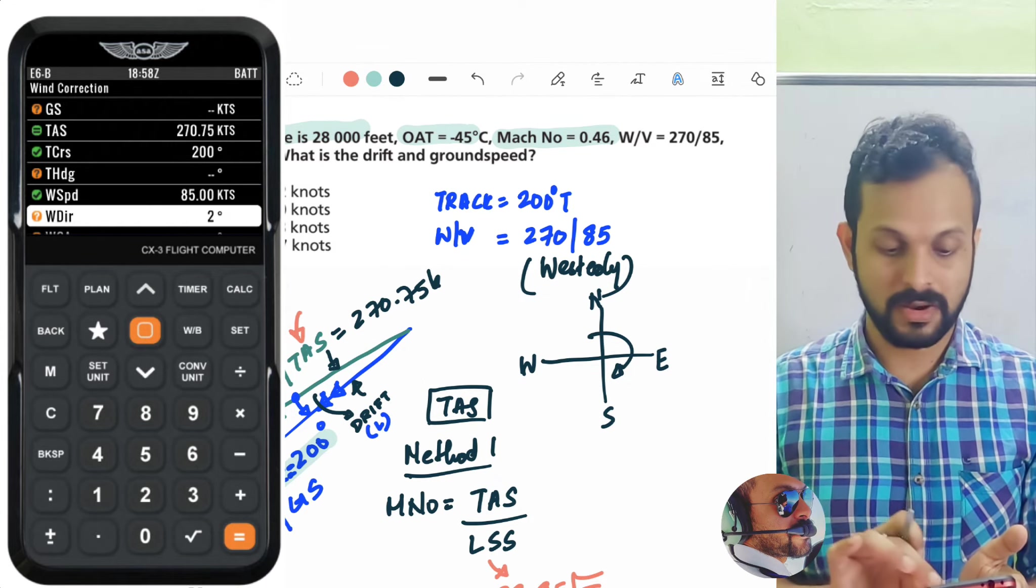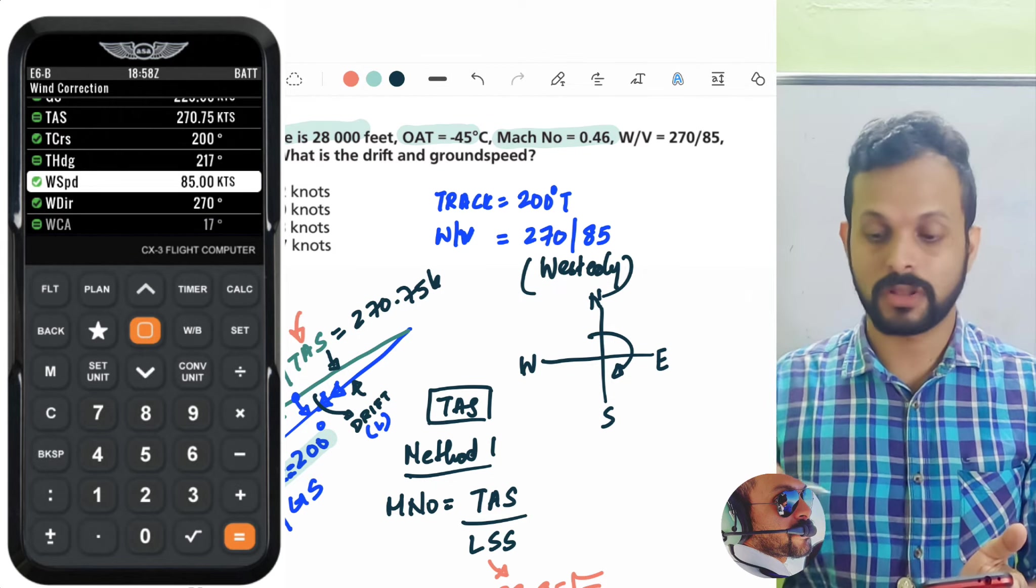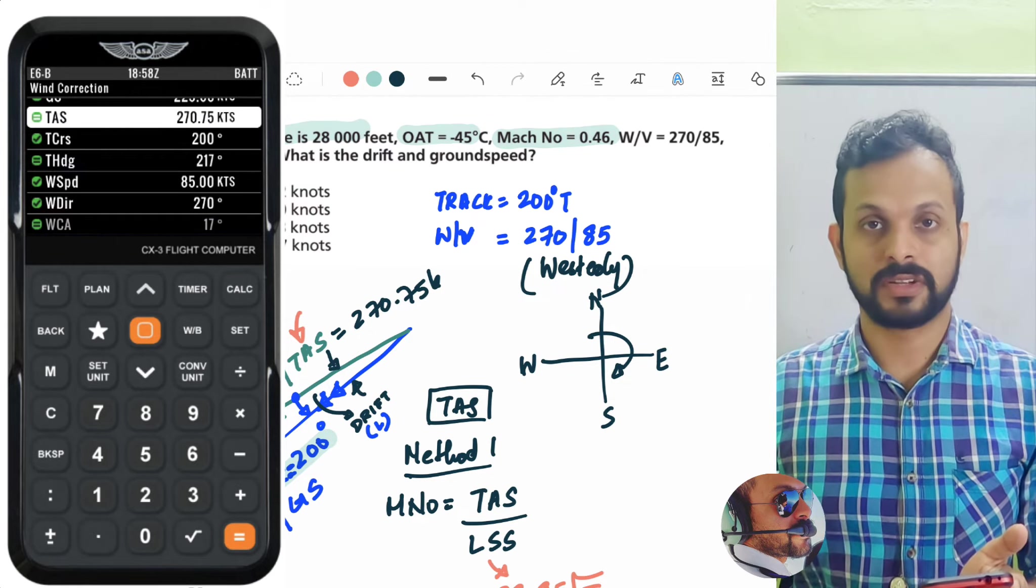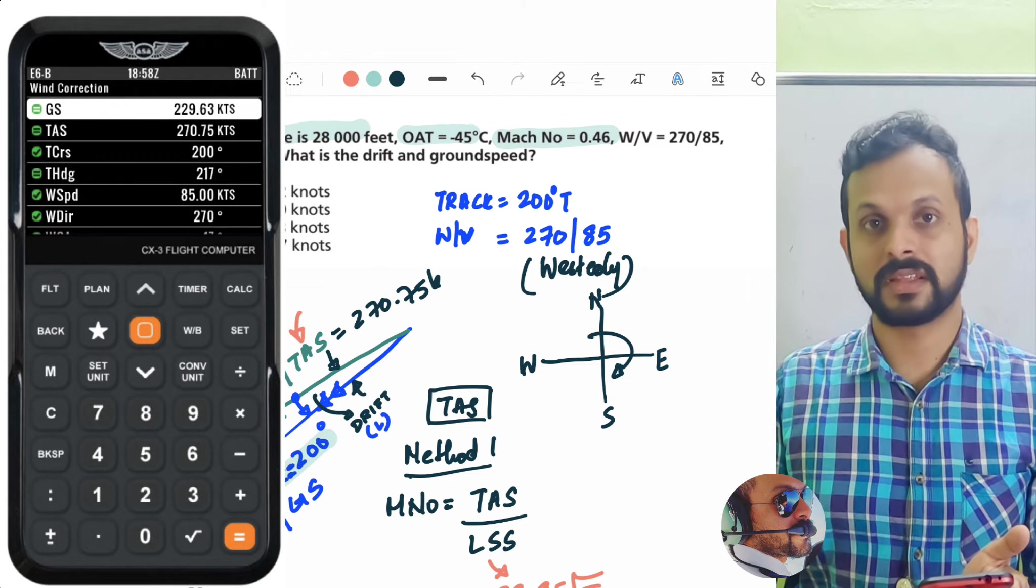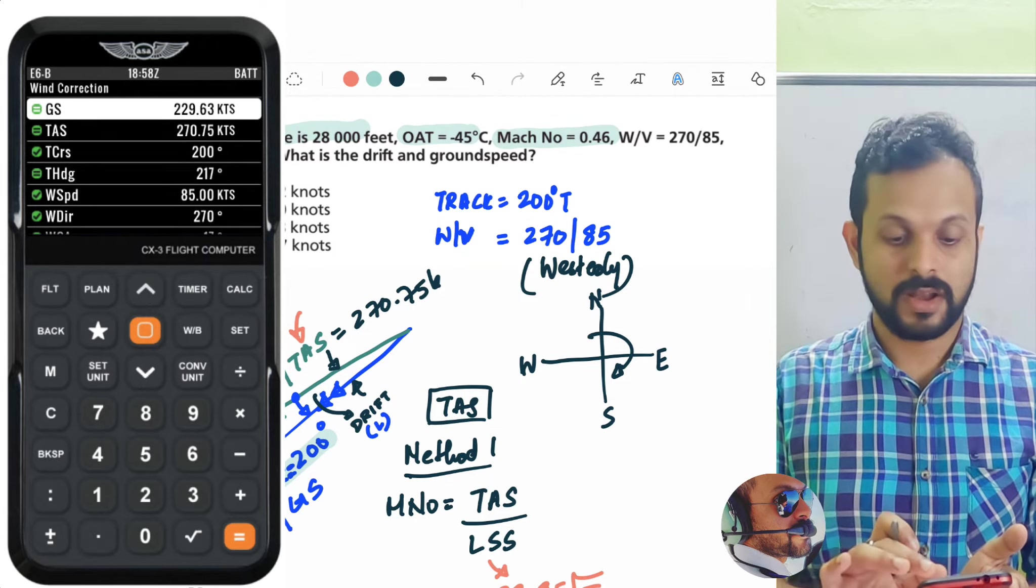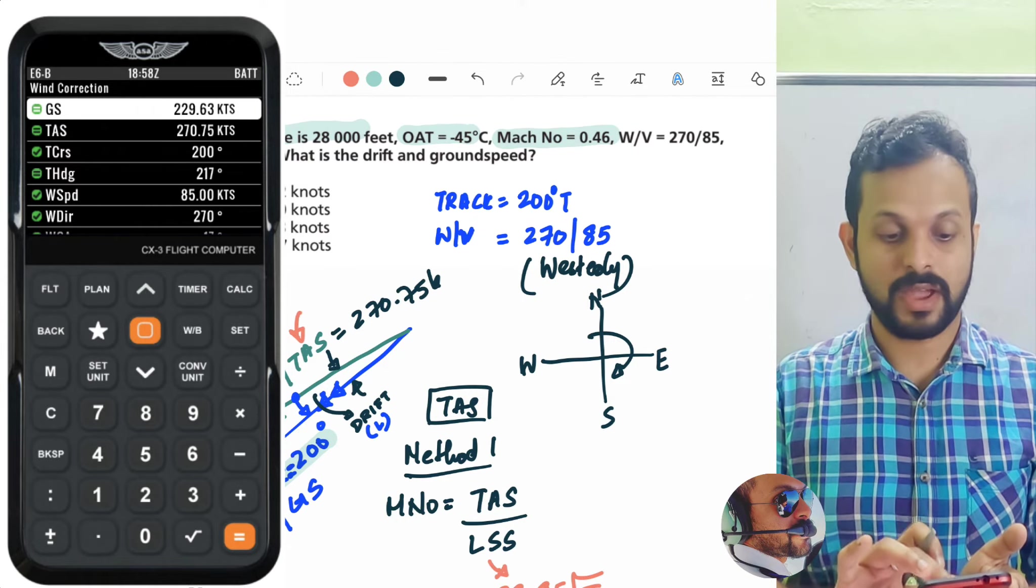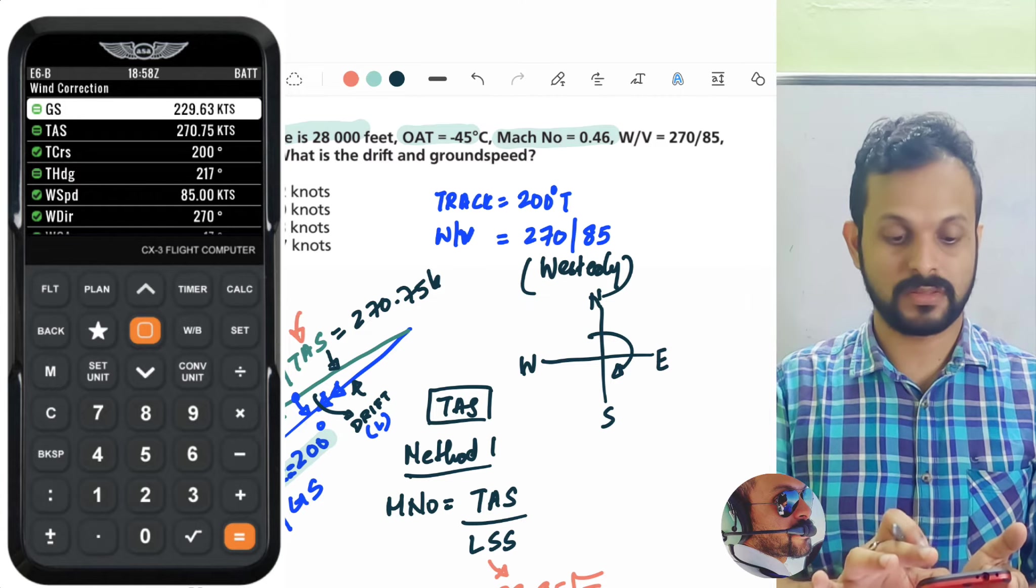So, let's enter the wind speed here and that's going to be 85 first and then followed by 270. All the values are true here. And therefore, there is nothing much to worry. Even with the wind, since nothing of ATIS and ATC is mentioned, it's all going to be a true value. Now, once you press enter, you get your ground speed and your heading straight away. So let's go and see what the ground speed is.